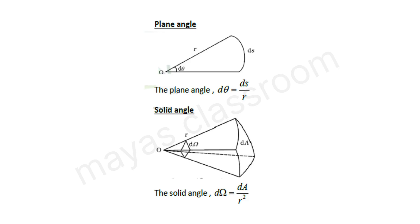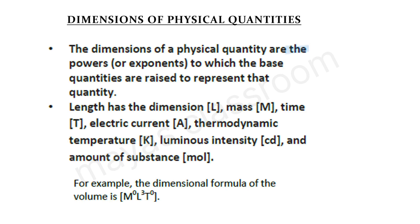For the solid angle, it is defined as the surface area divided by the square of its radius. This gives the steradian as the unit of solid angle. The ratio of the dimensions confirms the result.